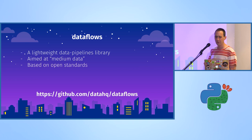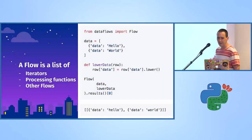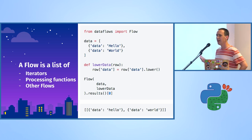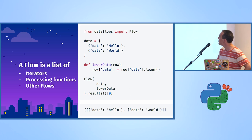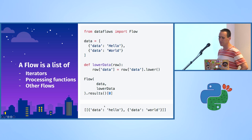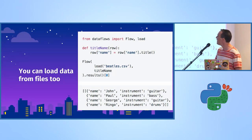Here's a taste of how dataflows looks. The core component is the flow — it takes a list of iterators and processing functions and generates what we call a data package, which is an open description of the data. In this basic example, we have a list of dictionaries and a function called 'lower_data' which processes a single row and modifies it. The result is the same array but lowercased. The same example can be repeated using a CSV file.